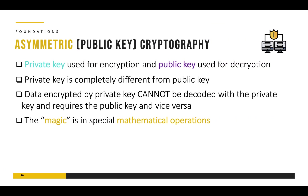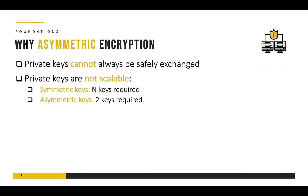The private key is used for encryption whereas the public key is used for decryption, and they are completely different from each other. Data encrypted with the private key cannot be decrypted with the private key — it needs the public key, and vice versa. Special mathematical operations allow two different types of keys to be used, giving tremendous power to asymmetric encryption. Asymmetric encryption is required to create the initial trust and the initial encrypted end-to-end communication channel, over which you can then exchange symmetric keys for later use.